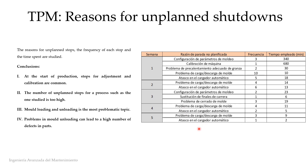This table shows the reasons for stoppages, the number of stoppages per week and the time spent in each of them. It can be seen that the most problematic stop is the loading and unloading of the mould, which can also cause large defects in the parts, either because the demoulding angles of the part are not sufficient or because there is trapping and a demoulding agent needs to be used. Stoppages due to machine adjustment and calibration are quite normal and decreased over time. It is decided to put the loading and unloading issue as the first priority because of its criticality.